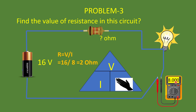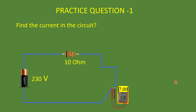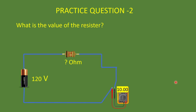We will look into these subjects in more detail in our circuit analysis chapters — this is the basic structure. Now I have some practice questions for you. First: find the current in a circuit with a 230-volt battery connected to a 10-ohm resistor. Second: a 120-volt battery is connected to an unknown resistor and the current is 10 amps — what is the value of the resistor? Please solve these and comment your answers in the comment section.